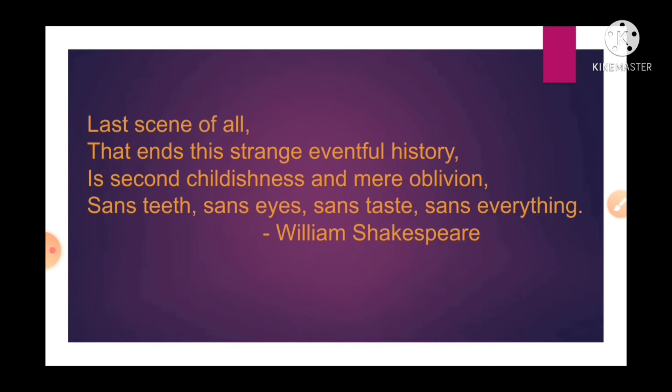The last scene of all — the seventh stage — ends this strange eventful history: a second childishness and mere oblivion, sans teeth, sans eyes, sans taste, sans everything. Sans means without; oblivion means forgetfulness. In the seventh and last stage, a man enters a second childhood. His condition becomes very miserable — he has grown very old and weak. He loses his teeth, eyes, taste, and everything one by one, and finally loses his life too. This final stage is called second childhood.